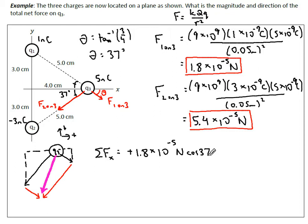The other force F2 on 3 has a negative x component, so I'm going to subtract 5.4 times 10 to the negative 5 Newtons cos 37 as well. Combining gives us negative 2.9 times 10 to the negative 5 Newtons.